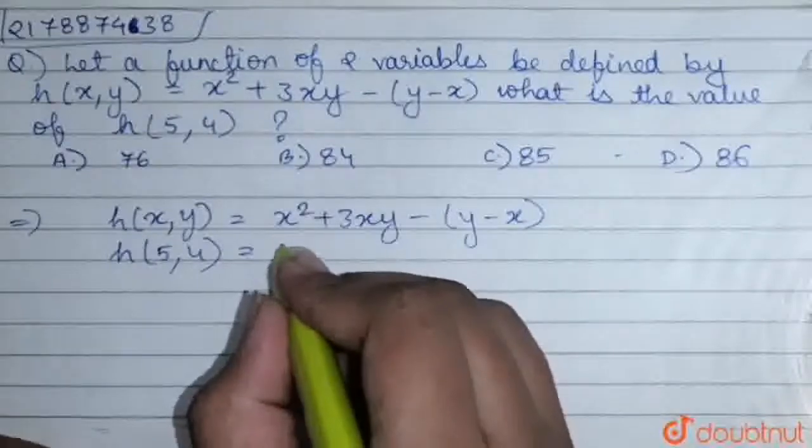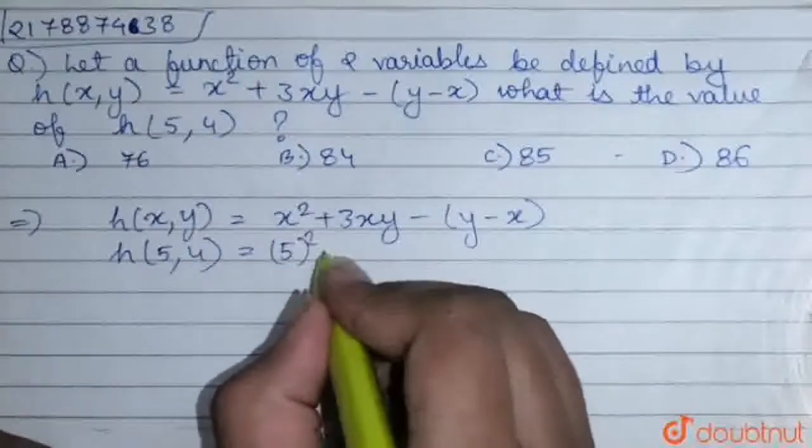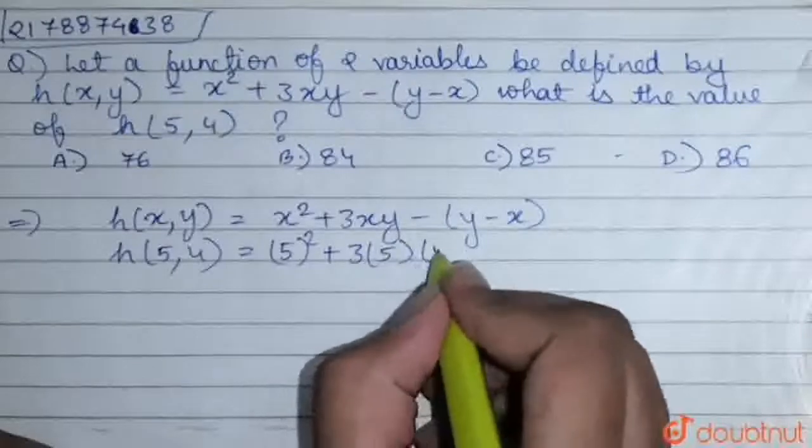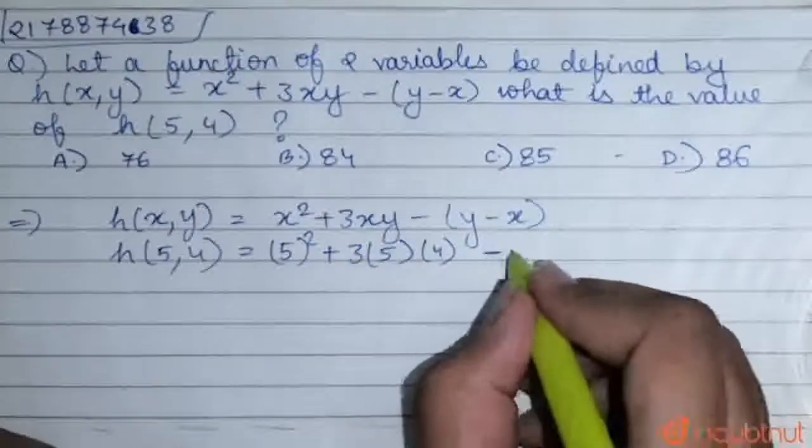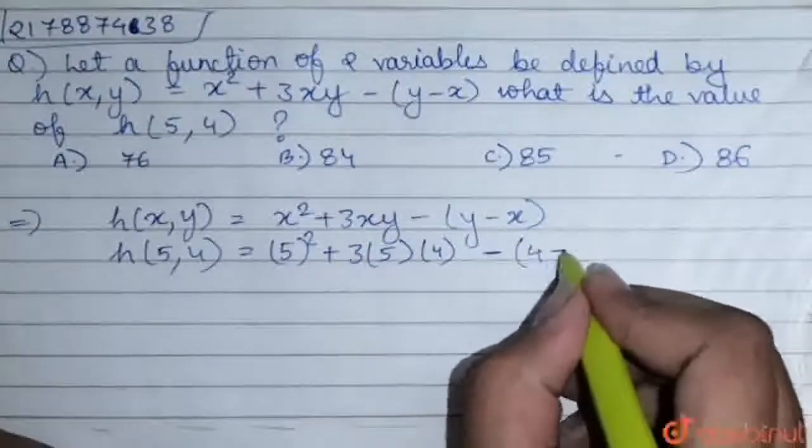So, here it is x square that is 5 square plus 3 into 5 into 4 because x into y minus of y that is 4 minus x that is 5.